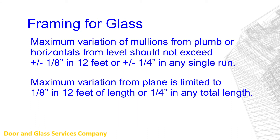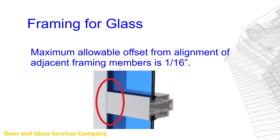Similarly, there are standards which apply to glass and glazing systems. The maximum variation of mullions from plumb or horizontals from level should not exceed plus or minus 1/8 of an inch in 12 feet, or plus or minus 1/4 inch in any single run. The maximum variation from plane of glazing system is limited to 1/8 of an inch in 12 feet of length or 1/4 inch in any total length. The maximum allowable offset from the alignment of adjacent framing members is 1/16 of an inch, meaning joints between metal frame elements should be aligned with one another and a misalignment should never exceed 1/16 of an inch.